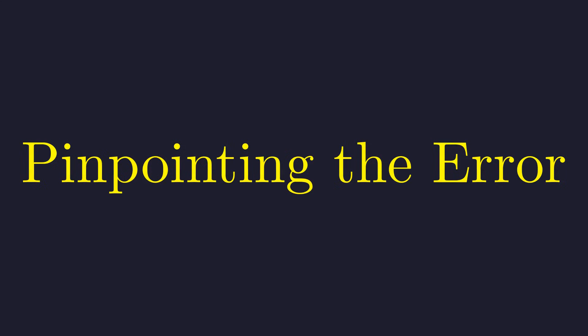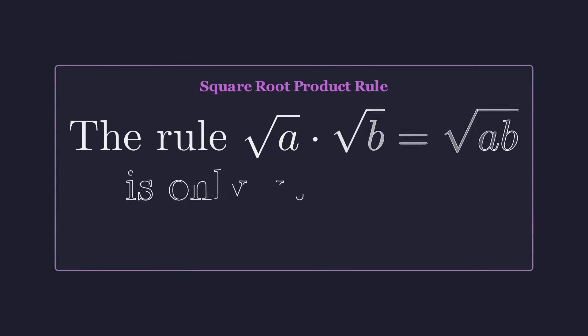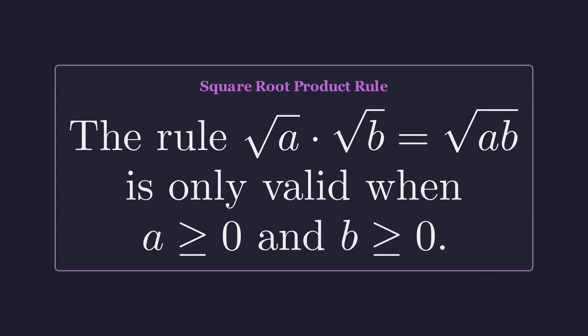Okay, so what went wrong? Well, the issue comes down to how we handle square roots. You know that rule where the square root of a times the square root of b equals the square root of a times b? That's only valid when both of those numbers are non-negative. When one or both are negative, the rule breaks down.